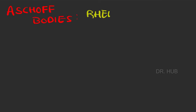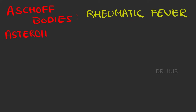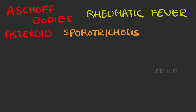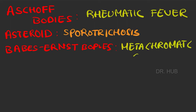Firstly, there is the Aschoff body seen in rheumatic fever, asteroid bodies seen in sporotrichosis, then Babes-Ernst bodies seen in metachromatic granules.